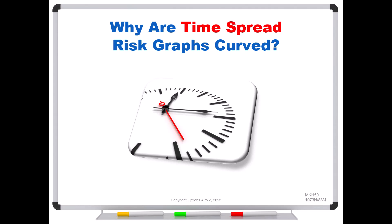Why are the time spread risk graphs curved? He had sent some screenshots from Thinkorswim and said that on a lot of the books and websites, it would show a calendar spread that looks like a certain shape, but on his platform, it didn't look that way. So what's going on? Why are the time spread risk graphs curved, and what's different about them from what we might call regular risk graphs? Well, let's go find out.